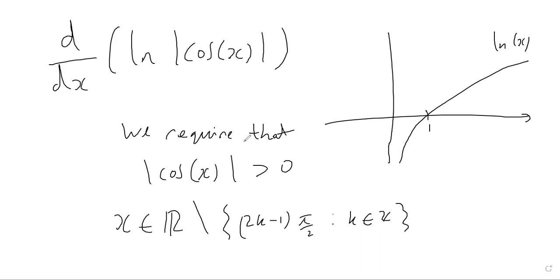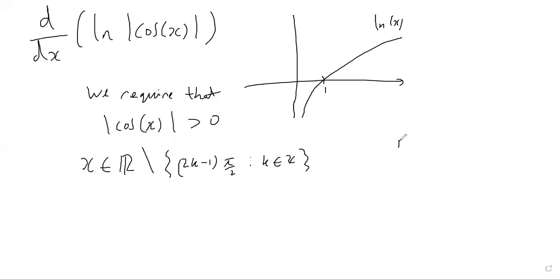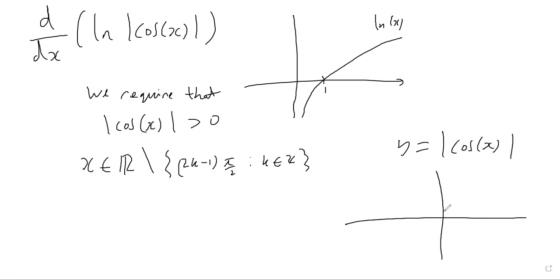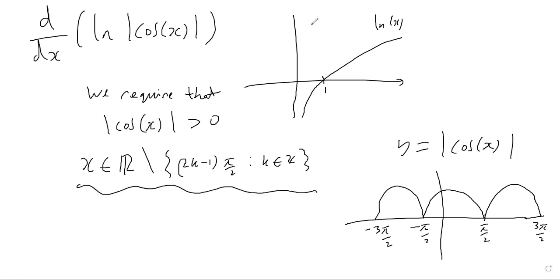We looked at this in the previous video. If we draw a sketch of y equals modulus of cos x, it looks like this, with repeated roots at π/2, 3π/2, −π/2, and so on — these odd multiples of π/2. So therefore, the modulus of cos x function is greater than zero for any real number apart from these odd multiples of π/2, and therefore this derivative will be defined for all such values.